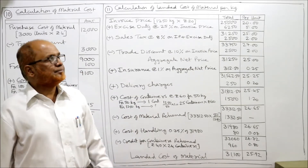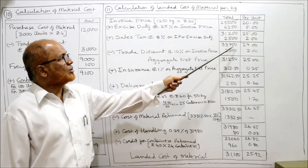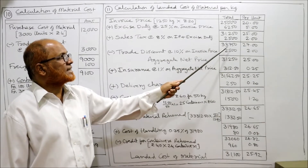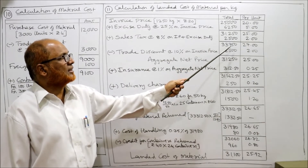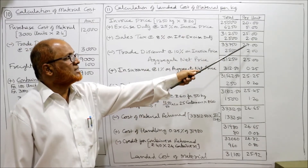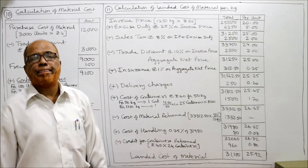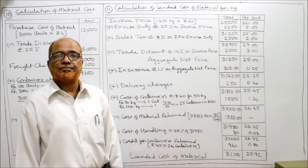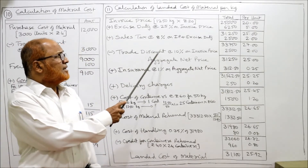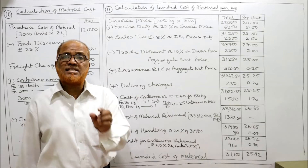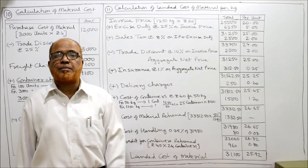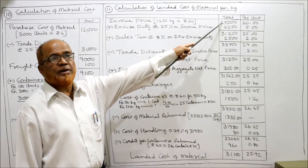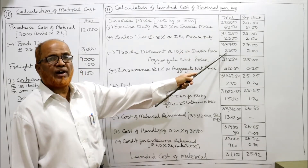Adding sales tax: 31,250 + 2,500 = 33,750 rupees, and 25 + 2 = 27 rupees per kilogram. From this we subtract trade discount, which is 10% of invoice price. Invoice price is 25,000, so 10% = 2,500 rupees is the trade discount.